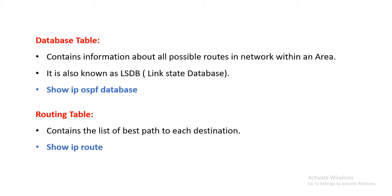The routing table is one of the most important tables. It contains only the best path from the source to the destination. Unlike the database table which shows all possible paths, the routing table shows only the best path. Even if there are 10 possible routes from source to destination, the routing table will show only one best path. The command 'show ip route' is used to display the routing table.